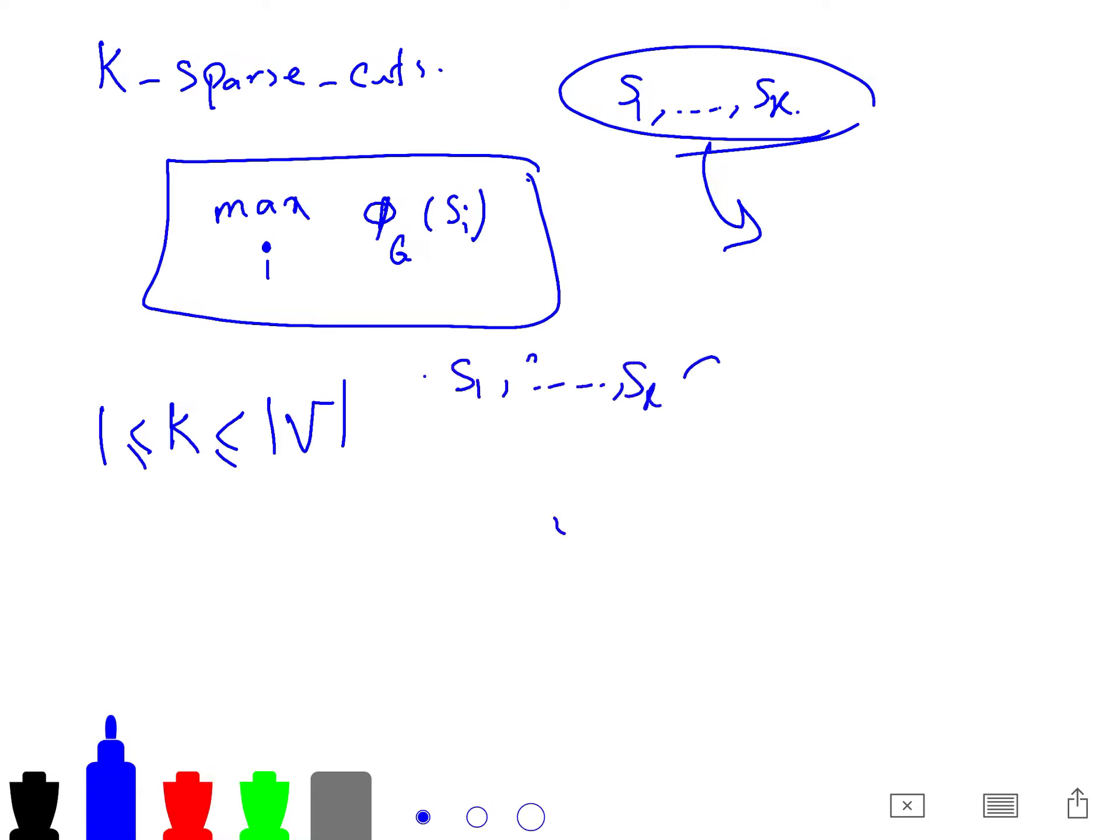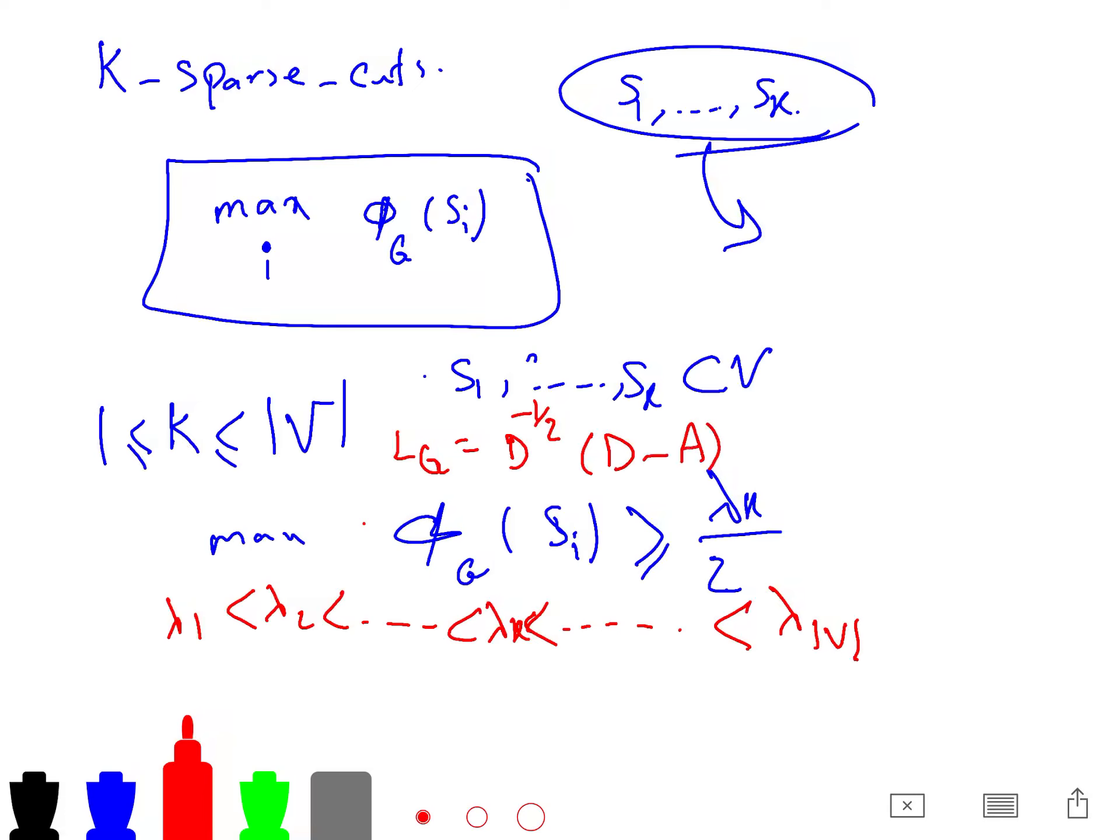And for any k disjoint sets that you say, sk, we could say that maximum of phi g of si is greater than lambda k over 2. And throughout the lecture, please assume that lambda 1, lambda 2, and all of them lambda k, and we have at most the number of vertices. And these are the eigenvalues of normalized Laplacian.